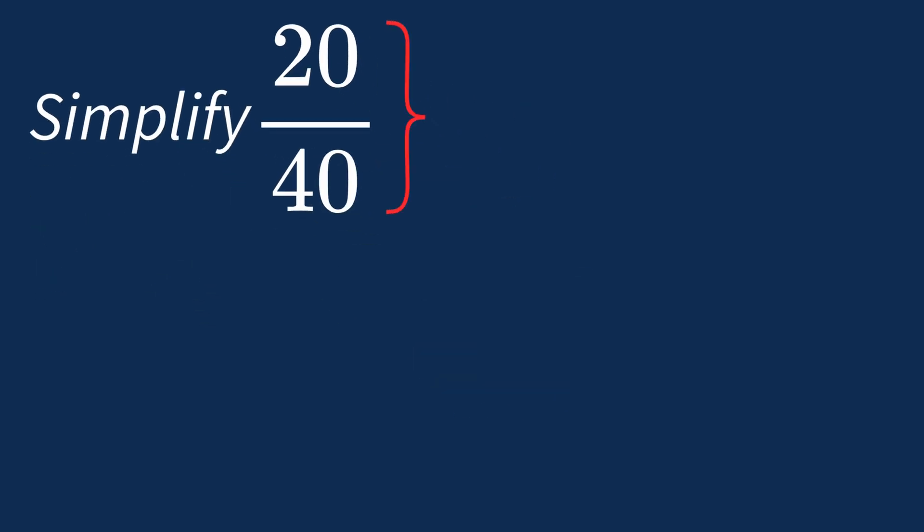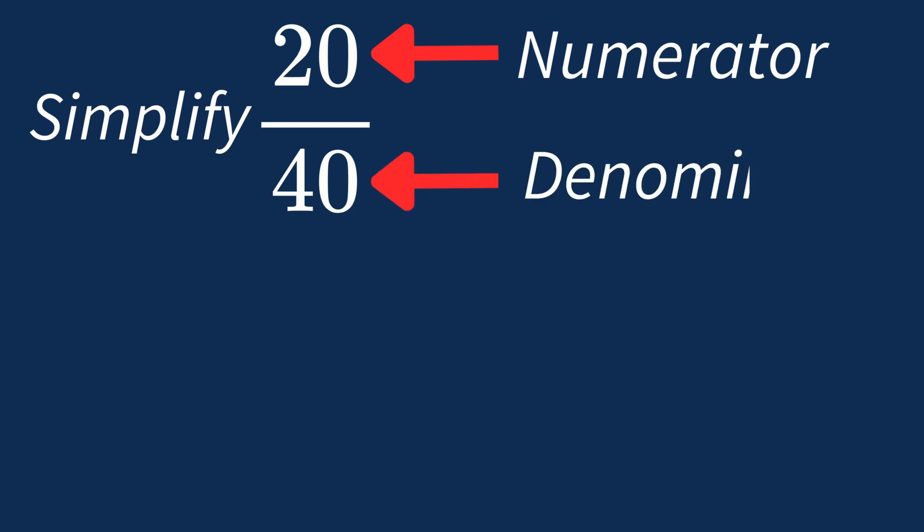To simplify 20 over 40, we need to look for the common factors between the top number, the numerator, and the bottom number, the denominator.